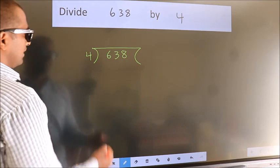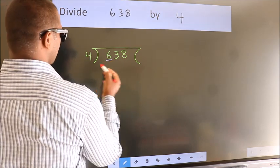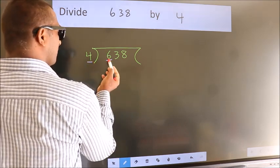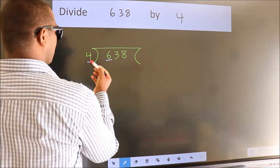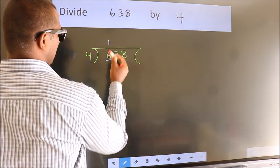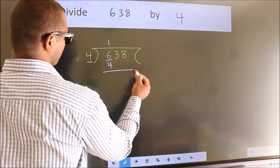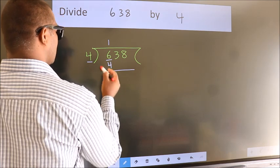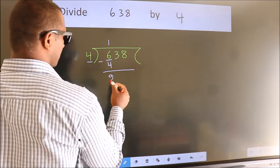Next, here we have 6, here 4. A number close to 6 in the 4 table is 4 times 1 equals 4. Now we subtract and get 2.